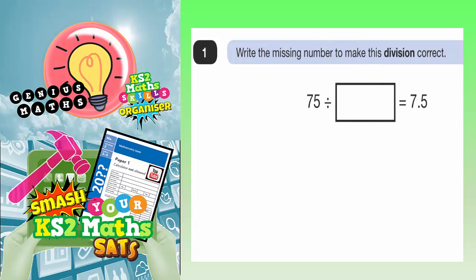Question 1. Write the missing number to make this division correct. We've got 75 divided by something equals 7.5. A lot of you will probably know straight away that the answer is 10, but let's have a little closer look as to why it is 10.